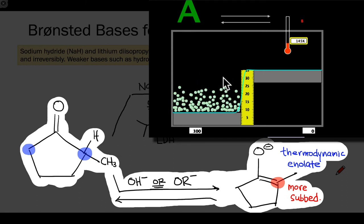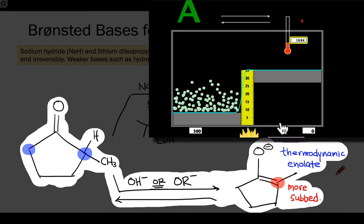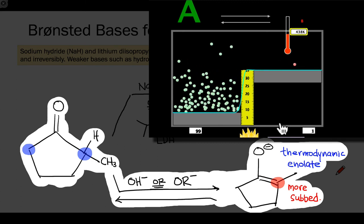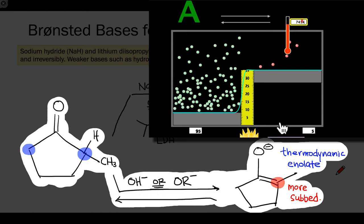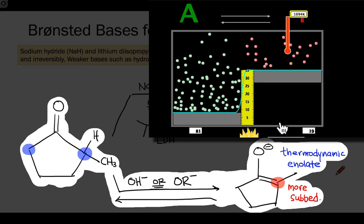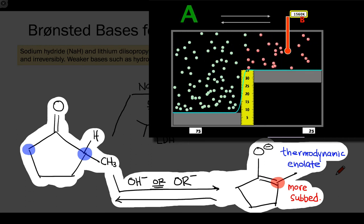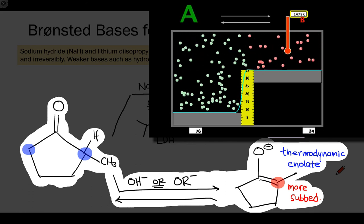One thing you may be wondering about is: with hydroxide or alkoxide, the base is weaker than an enolate, so it doesn't seem possible for hydroxide to deprotonate a ketone. And in fact, it's thermodynamically disfavored — at equilibrium we have much more of the starting ketone than the enolate. It is still possible to drive the enolate to complete reactivity even with a weaker base. The way we do this is by taking advantage of Le Chatelier's principle: if we generate the enolate under conditions in which it's rapidly consumed, we can convert all of a carbonyl compound to substituted product by generating small amounts of the enolate at a time.